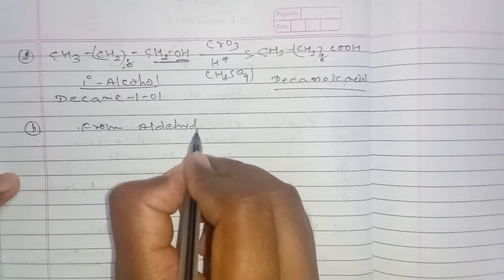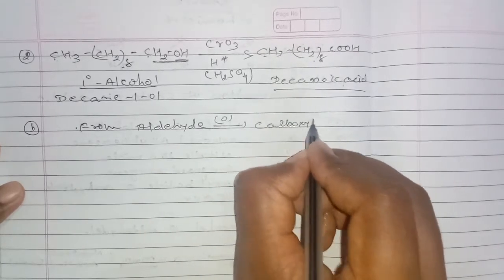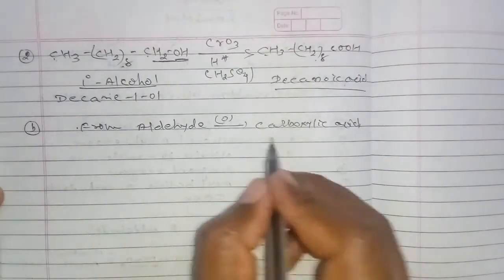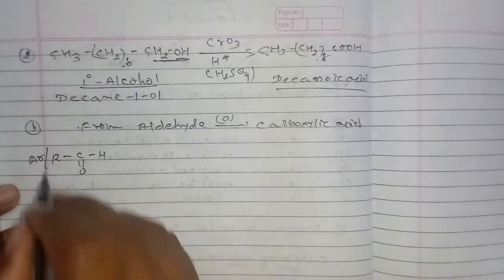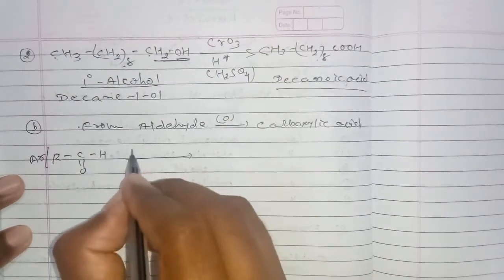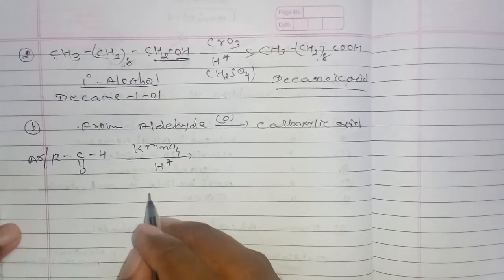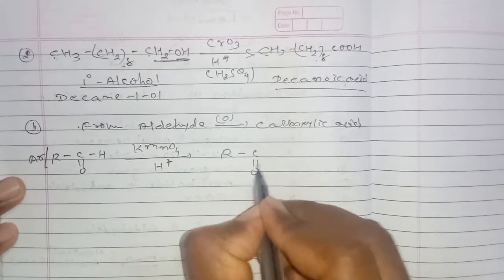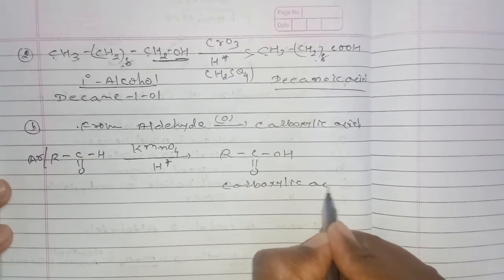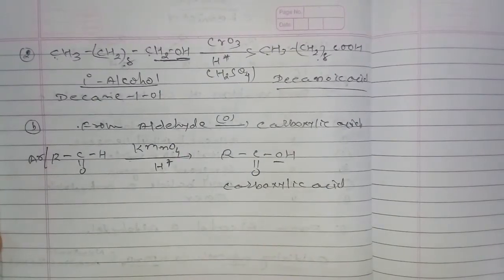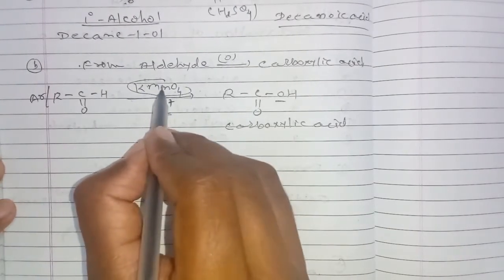The product has 10 carbons, and its name is decanoic acid. Now the preparation of carboxylic acid from aldehyde: aldehyde is oxidized and converted to carboxylic acid. This applies to both aromatic and aliphatic aldehydes. The oxidizing agent potassium permanganate is used in acidic medium, and it is converted to carboxylic acid by the addition of an oxygen atom.